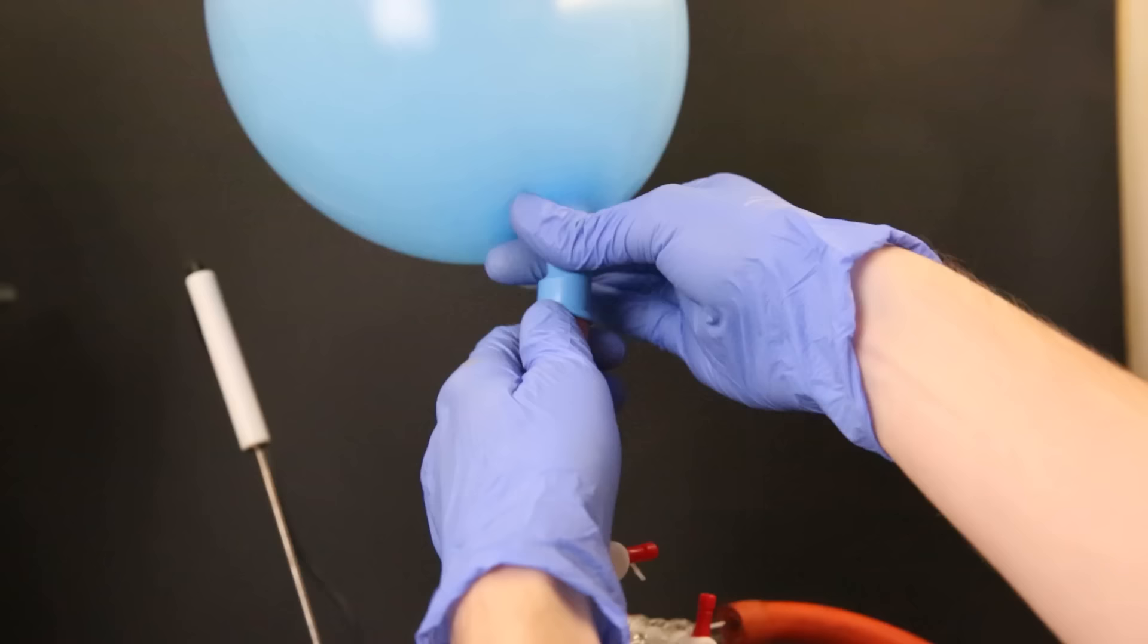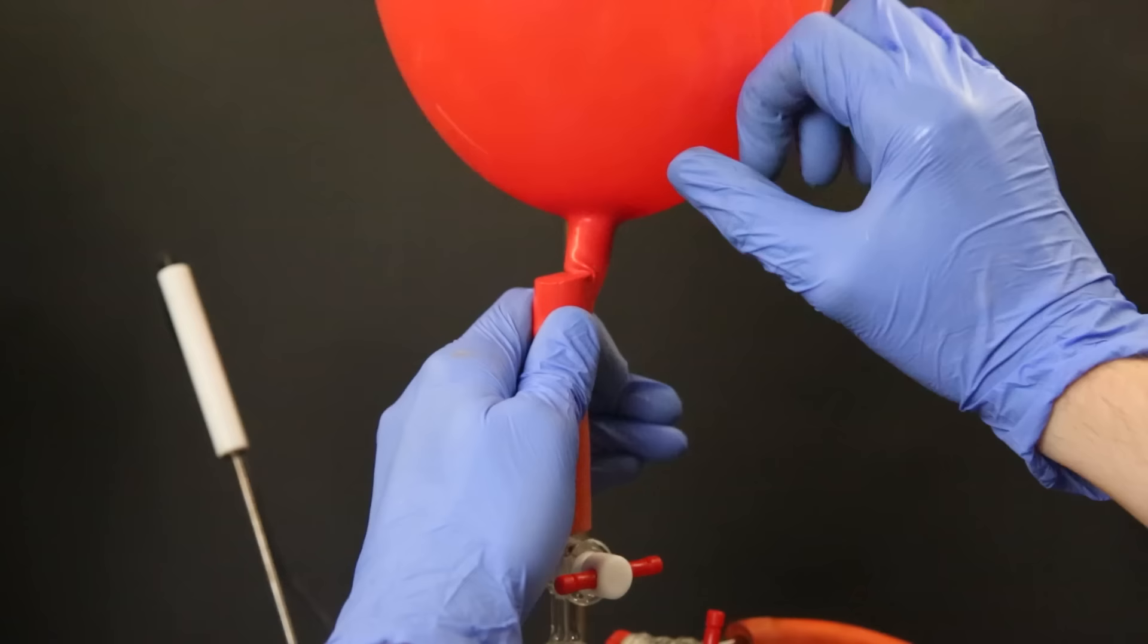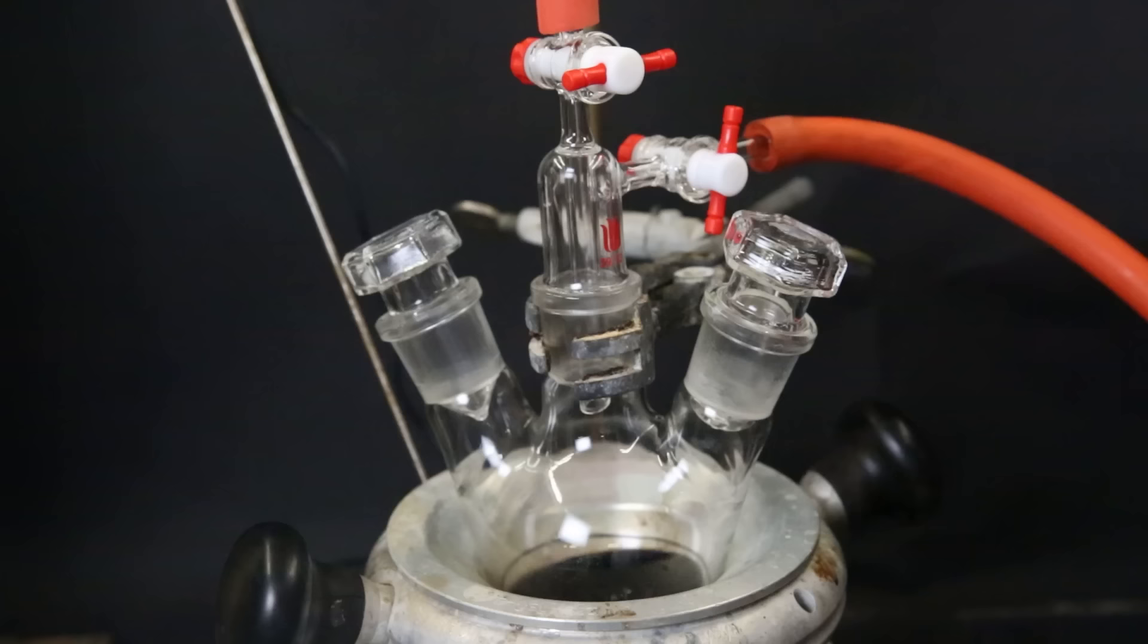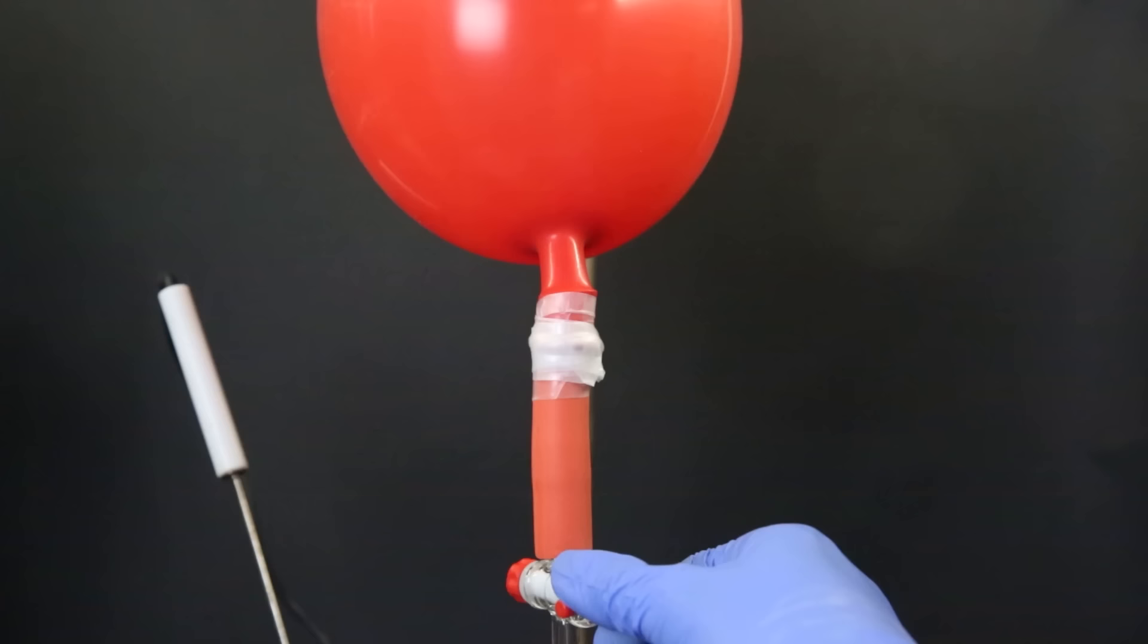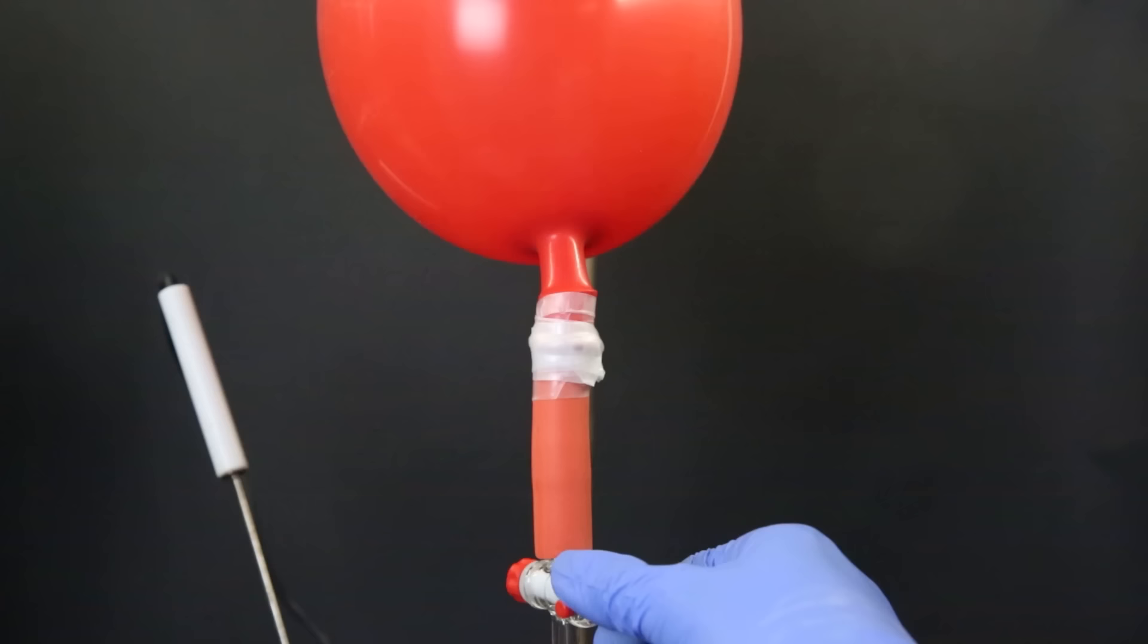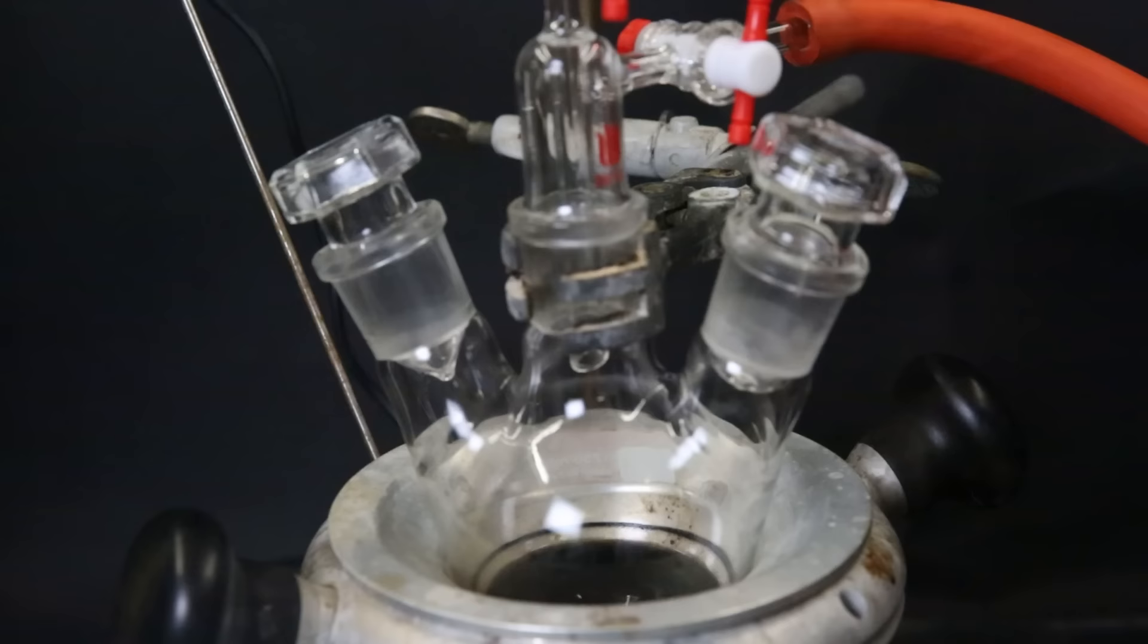I remove the argon balloon and then attach a new balloon filled with hydrogen. In the same manner as before, I now want to replace all of the argon with hydrogen. So I repeat the same process as before. When that is done, I keep the way to the hydrogen balloon open so that the reaction can also consume hydrogen directly from the balloon. Since the amount is quite little, one balloon contains more than enough hydrogen to complete the reaction.